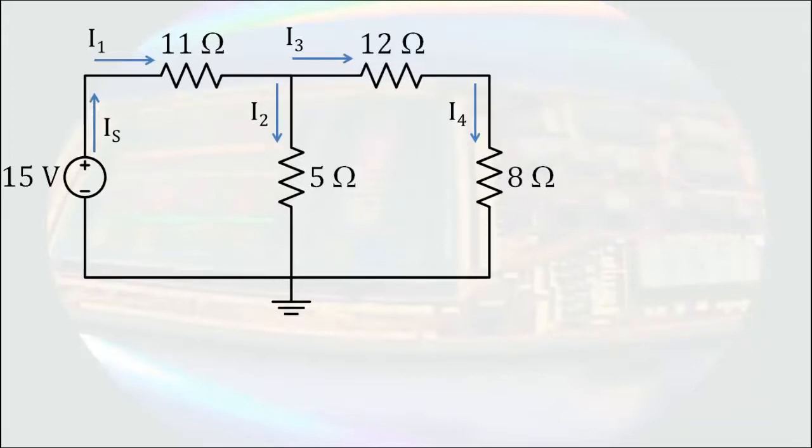Now let's turn to Kirchhoff's current law. To apply Kirchhoff's current law, we will first need to identify the nodes at which we're going to write KCL equations. The circuit has four nodes. We can write the equations for all the unknown currents if we write equations for the top three nodes.